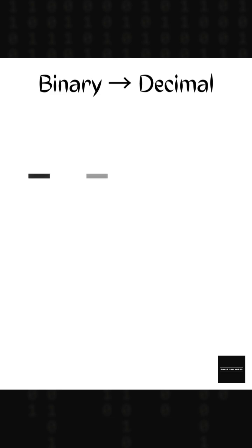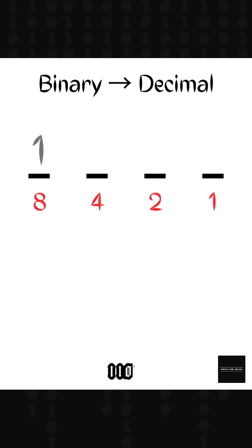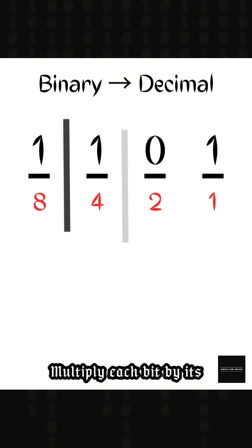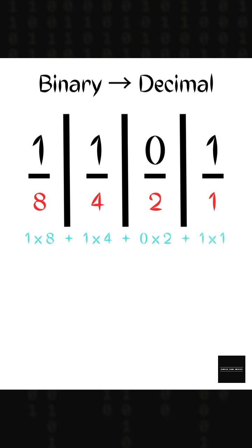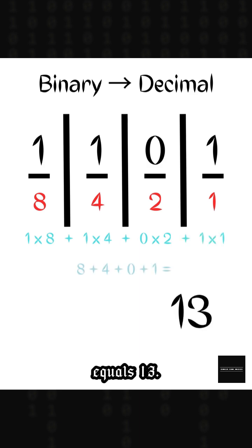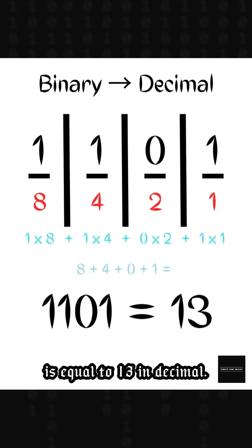Binary to decimal. Binary numbers are powers of 2. Example: 1, 1, 0, 1. Multiply each bit by its place value: 1 times 8, plus 1 times 4, plus 0 times 2, plus 1 times 1, equals 13. So 1101 in binary equals 13 in decimal.